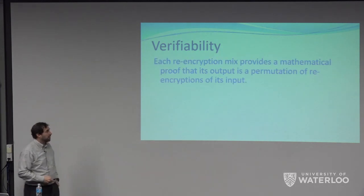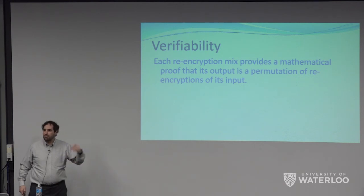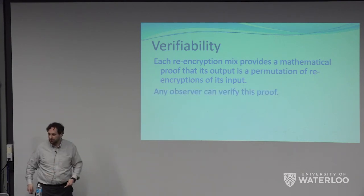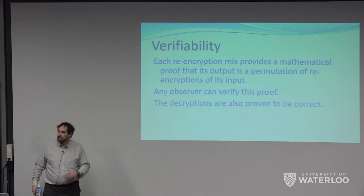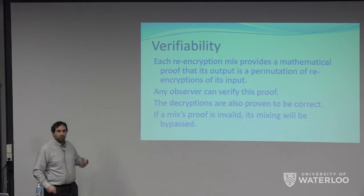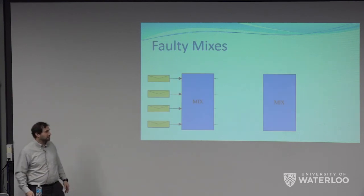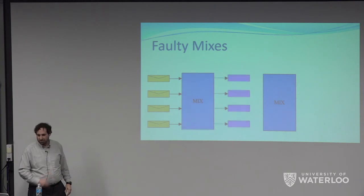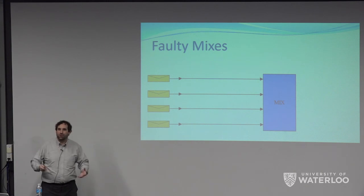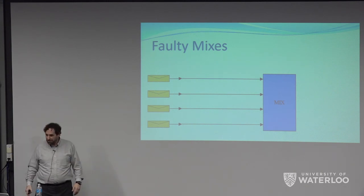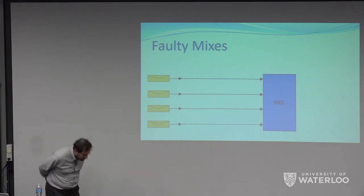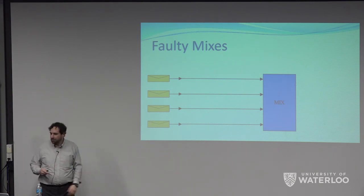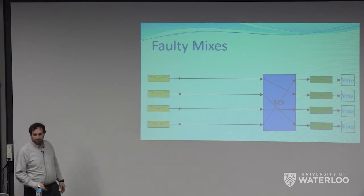Finally, at the end, we decrypt the final thing — this can be a threshold encryption kind of thing, requiring three out of five shareholders to decrypt the votes at the end. Each mix has to provide a mathematical proof that its output is a permutation of a re-encryption of its inputs — a proof any observer can verify. If a mixnet proof is invalid, it doesn't ruin the election, you just ignore that mix. It's the moral equivalent of one person forfeiting their opportunity to give the ballot box an extra shake — you haven't harmed anything, votes can still be decrypted.